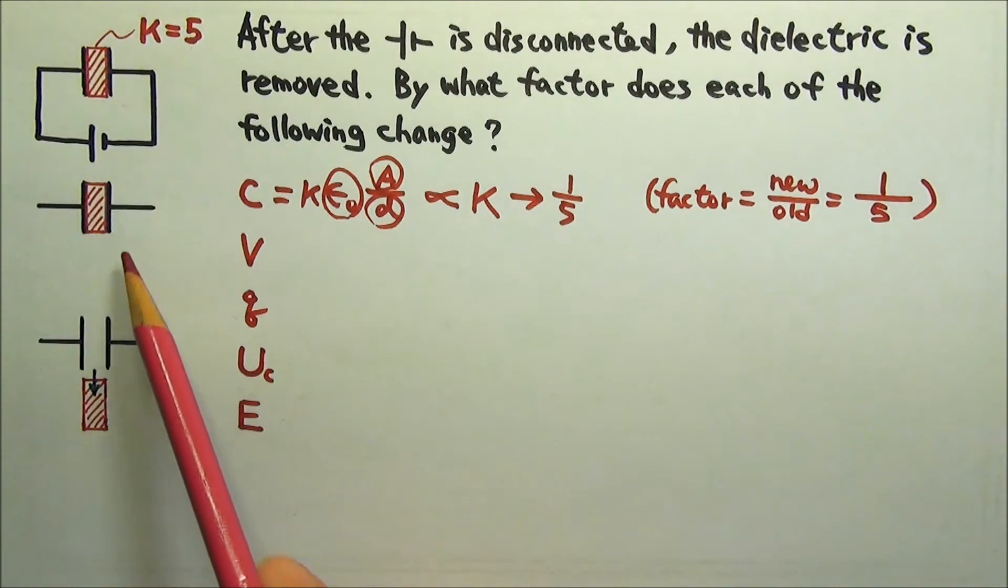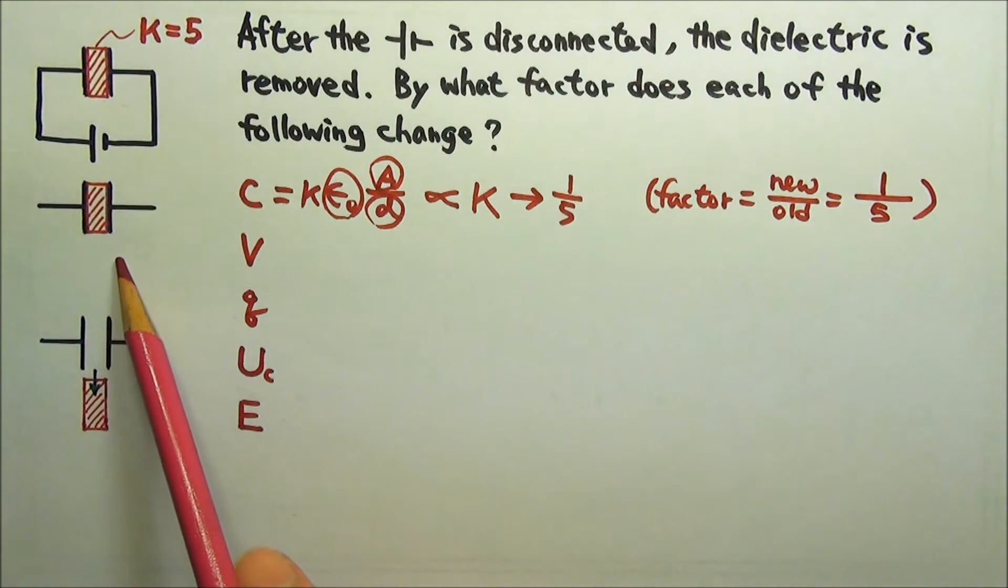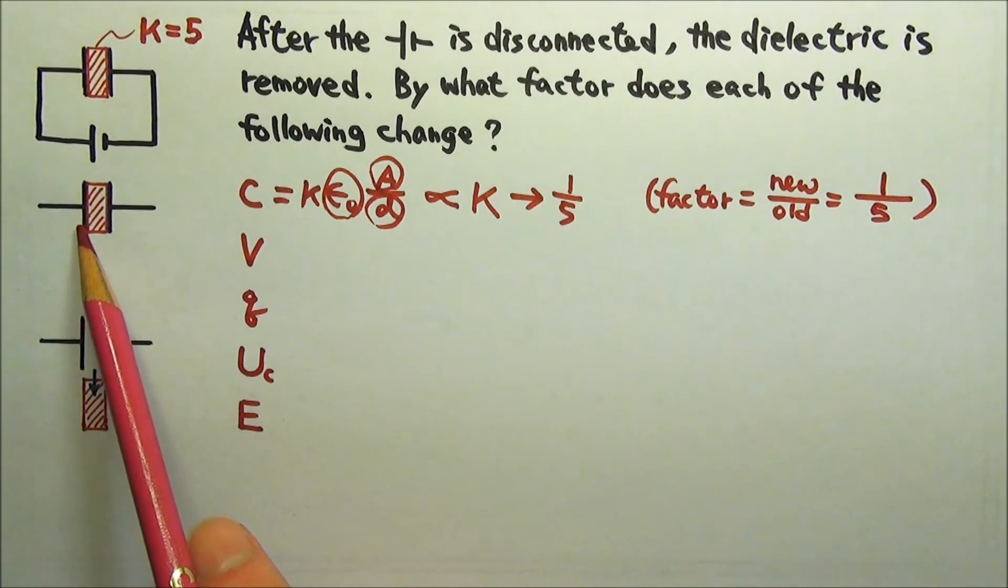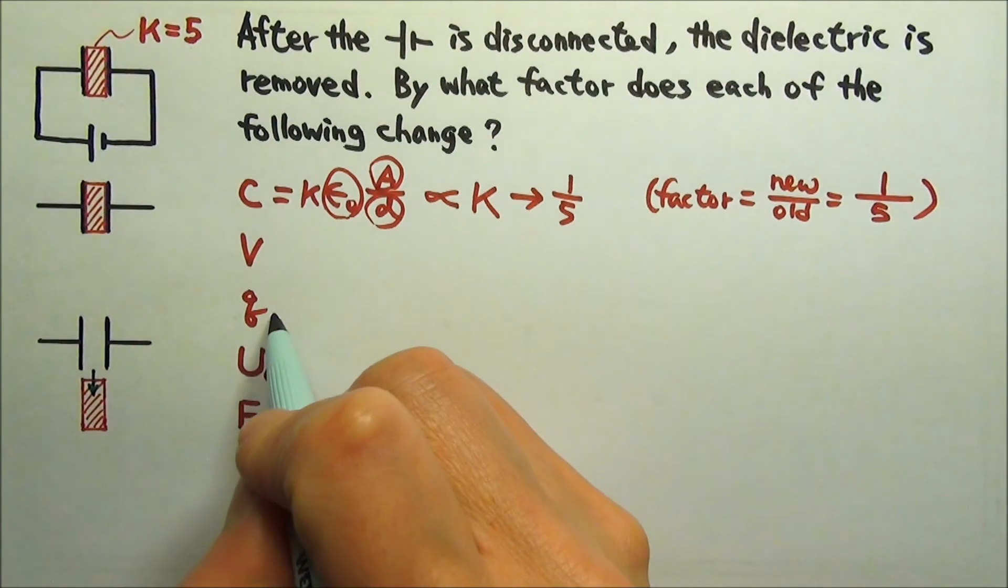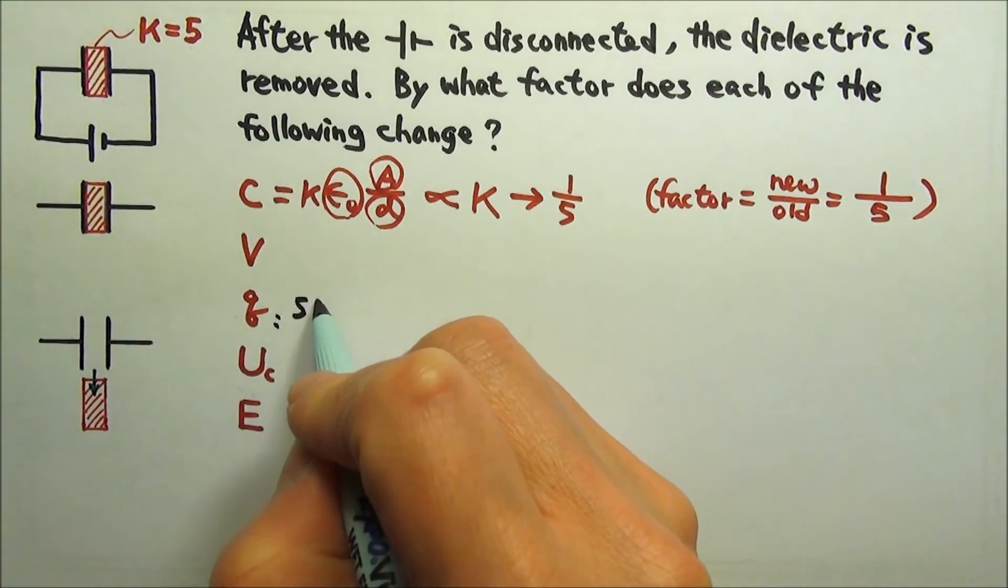After the battery is disconnected from the capacitor, we have an isolated capacitor. That means the charges on the plates will have nowhere to go. So the charge on the plates would stay the same.